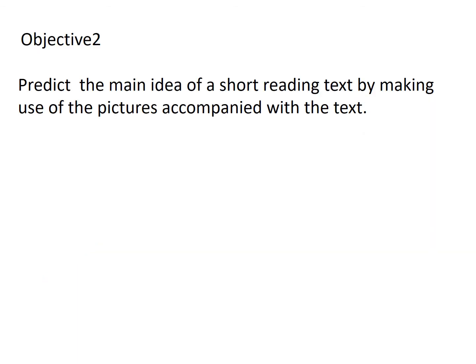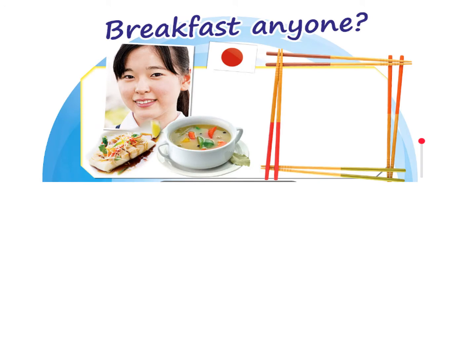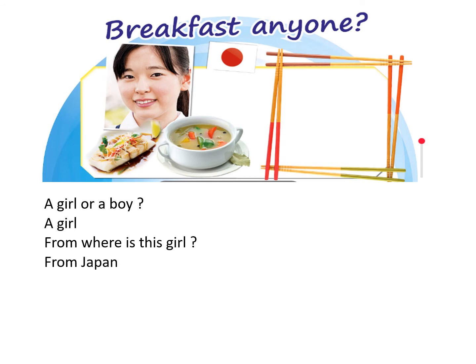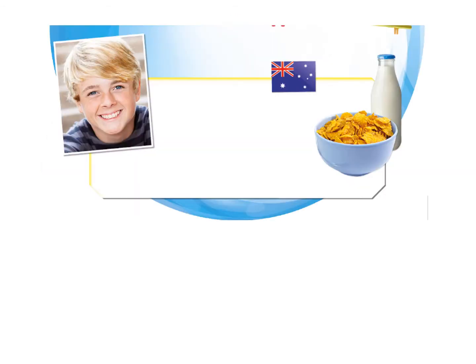Now we come to objective number two, which is to predict the main idea of a short reading text by making use of the pictures accompanied with it. Look at the pictures and answer: is it a girl or a boy? A girl. From where is this girl? From Japan. What does she talk about? She talks about the food she likes. What does she like for breakfast? Fish and soup.